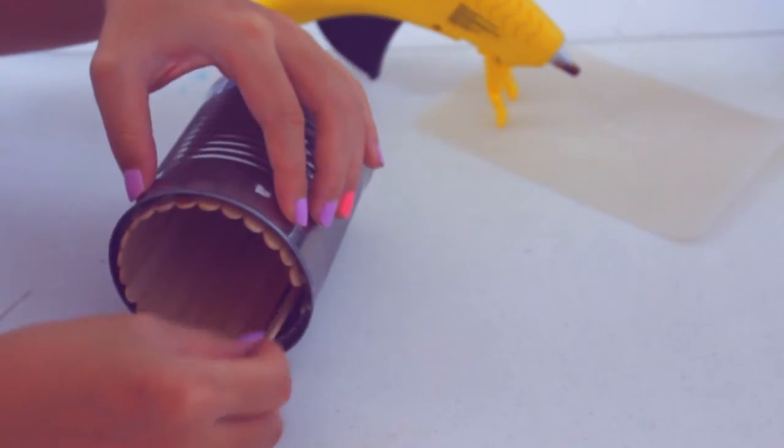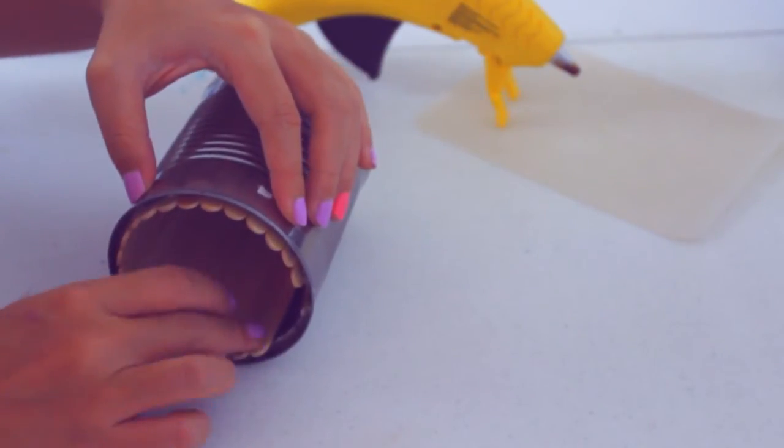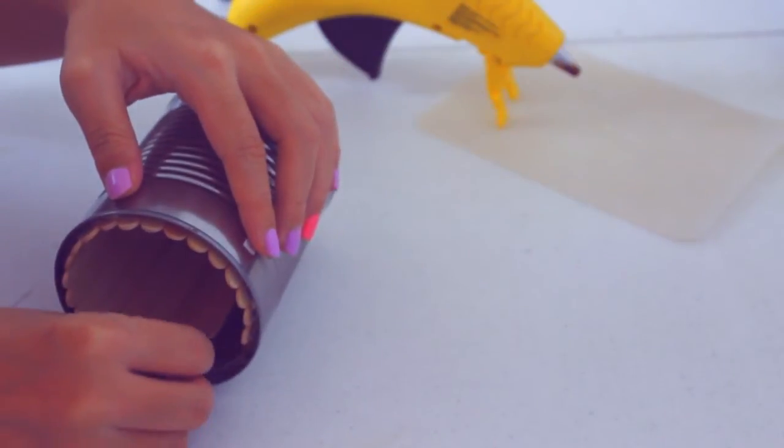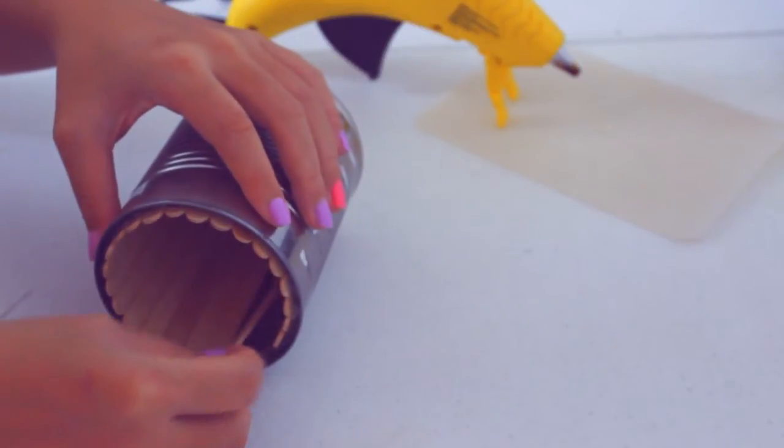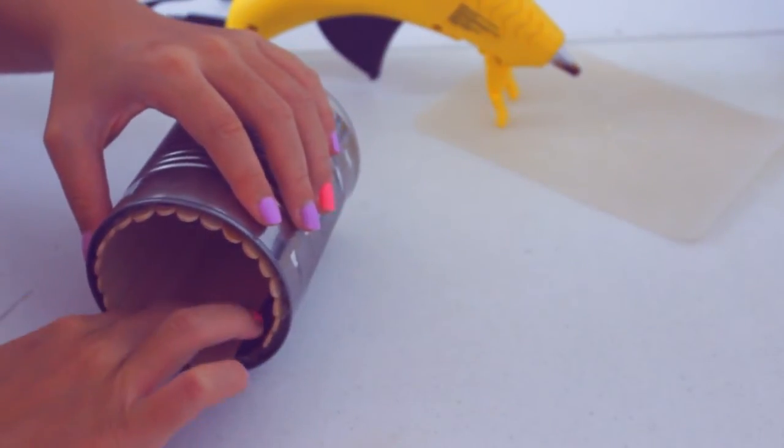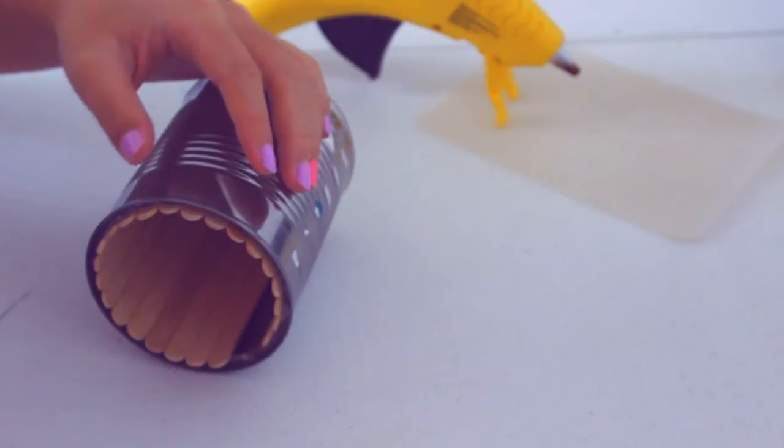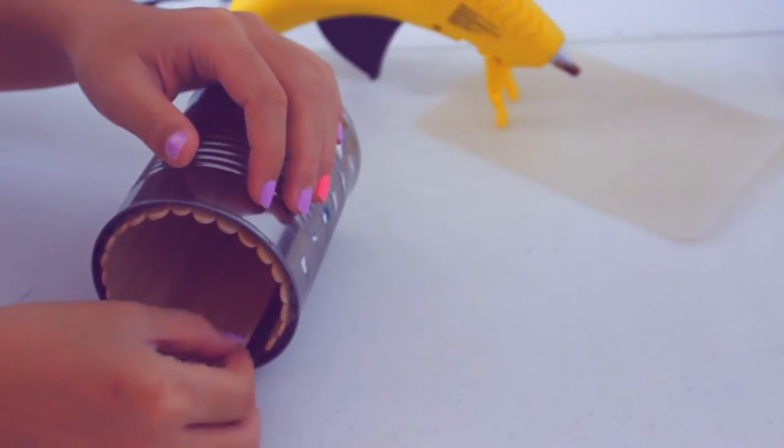I actually didn't measure this, but I was so glad that my popsicle sticks fit perfectly in this tin can, so I didn't need to make any adjustments. To keep the popsicle sticks in place, I am using hot glue. I'm gluing on the top layer rather than bottom layer because it's a lot easier to reach the top than the bottom.